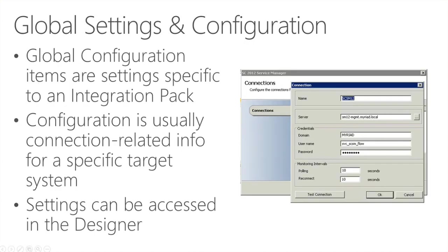Global configuration items are settings specific to an integration pack. For example, with the Service Manager integration pack, you define your connection to a specific Service Manager instance or management server. Those settings can be accessed in the designer and used within your activities, allowing you to run runbooks against different management servers. You can define multiple connections and use them differently in your runbooks.